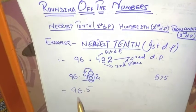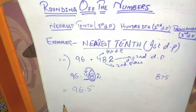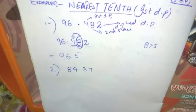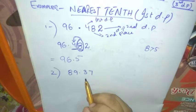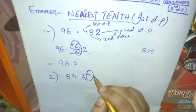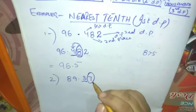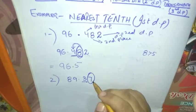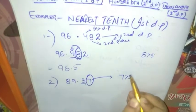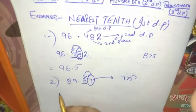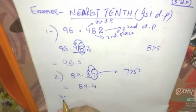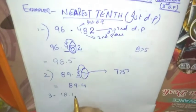Now the second example: 89.37. First, we underline this digit in the tenth place and circle the next digit on its right. The next digit is 7, which is greater than 5, so we add 1 to this digit. Therefore, the number becomes 89.4.